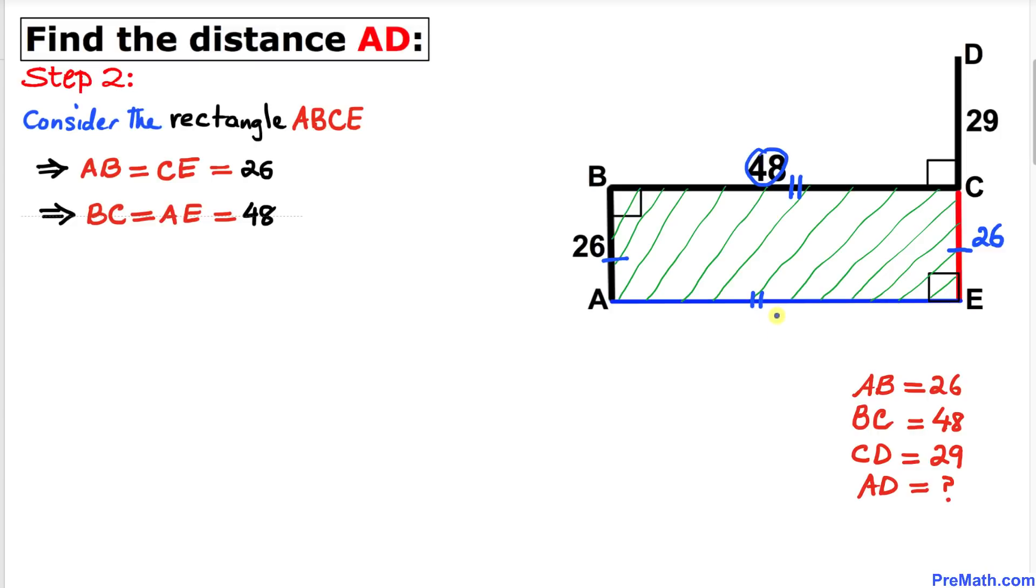If this side length is 48, this has got to be 48 as well. Moreover, this whole distance DE is going to be the sum of 29 plus 26. Therefore, this distance DE turns out to be 55.